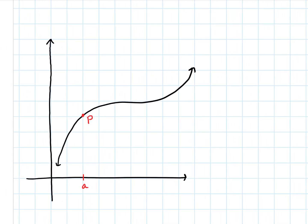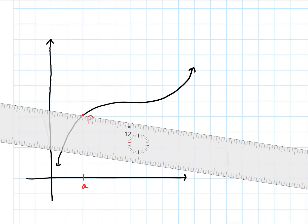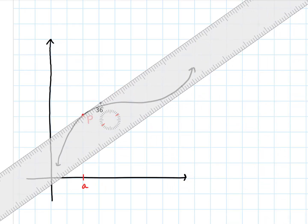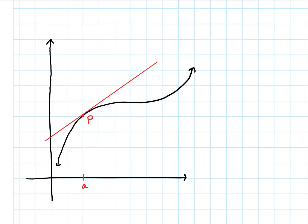Here's our function. If we want the slope of this tangent line at P — tangent means we're just going to touch the curve — we tend to want the actual equation of the tangent line. But let's focus on the slope here for a second, because that's the part we're going to have to use a limit to find, because one point is not enough to find a slope. You need two points.